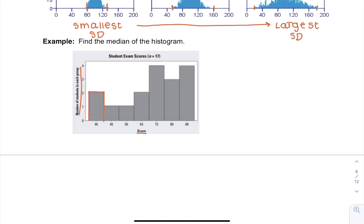So in this 40 range we've got two. Then in the 48 range we have one, in the 56 range we have one, in the 64 range we have two, in the 72 range we have four.